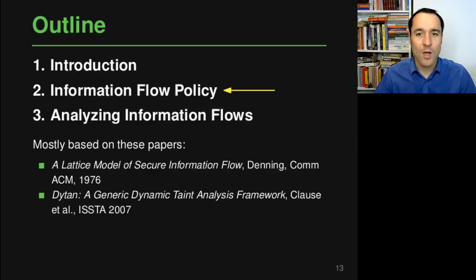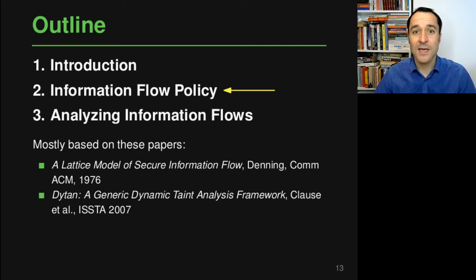Hi and welcome back to program analysis. This is part two of the lecture on information flow analysis. In the first part we saw what information flow analysis actually is and what it's supposed to do. In this second part we'll have a more detailed look into an information flow policy, which is basically a way to specify what exactly the analysis is checking and what kind of propagation of information the analysis is supposed to warn us about.